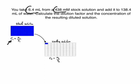We add these 6.4 milliliters to a given volume of 138.4 milliliters. So our dilutant is 138.4 milliliters. That is basically what we do, and we are asked to calculate the dilution factor and the concentration of the resulting solution.